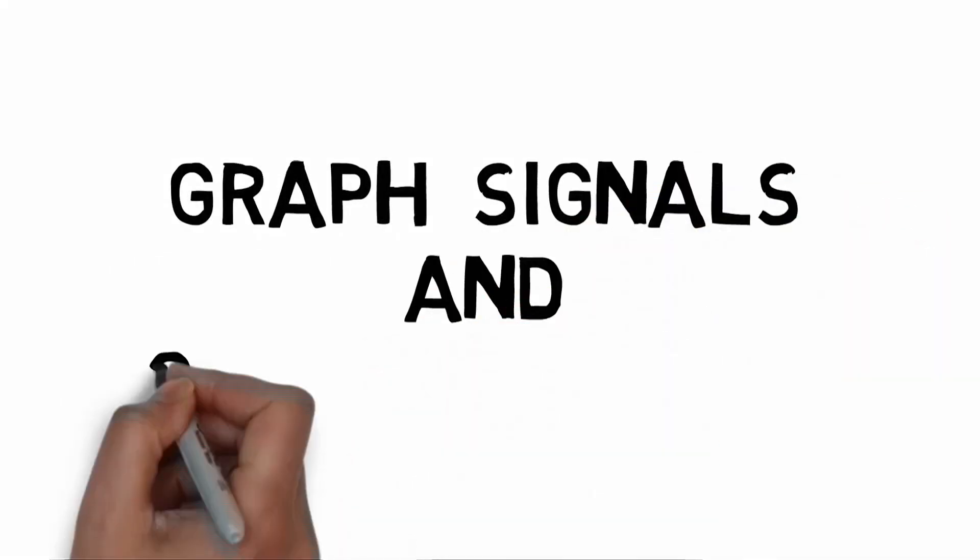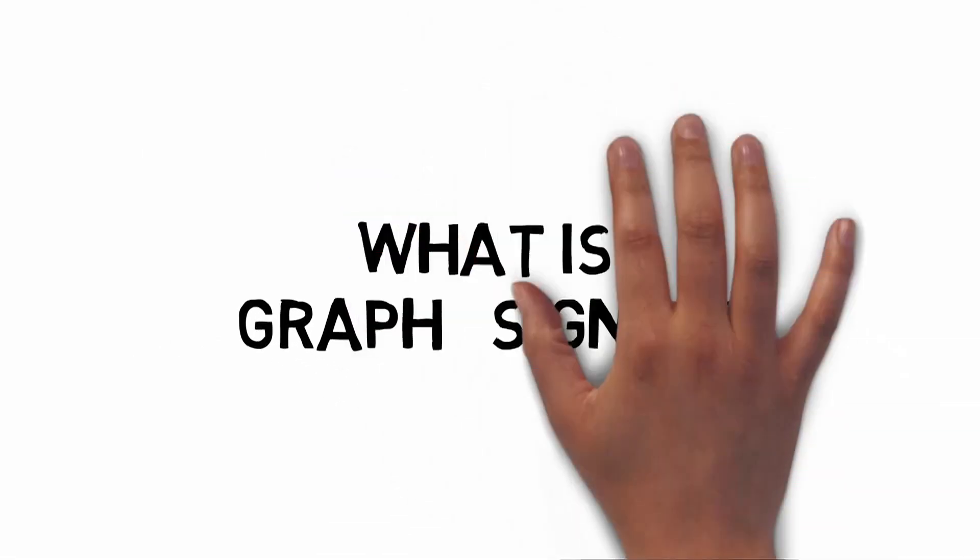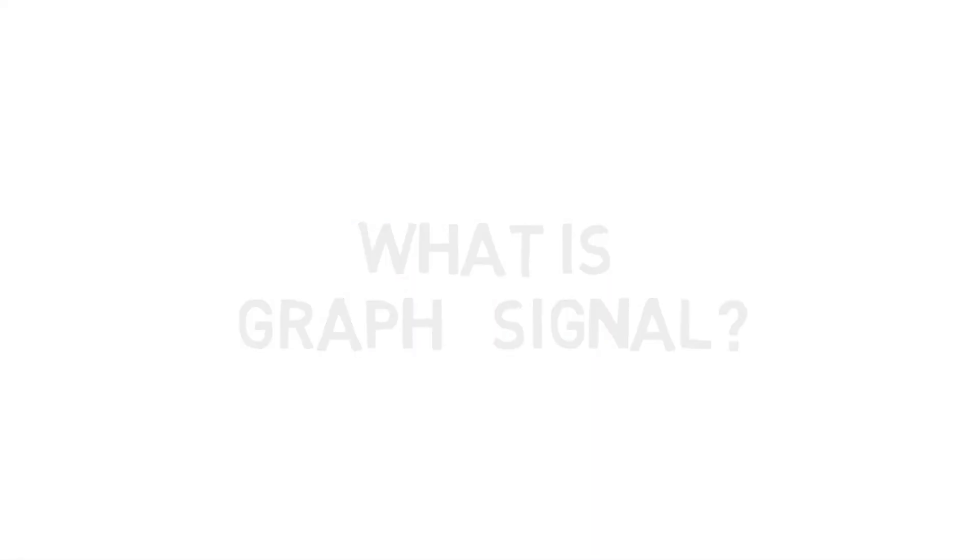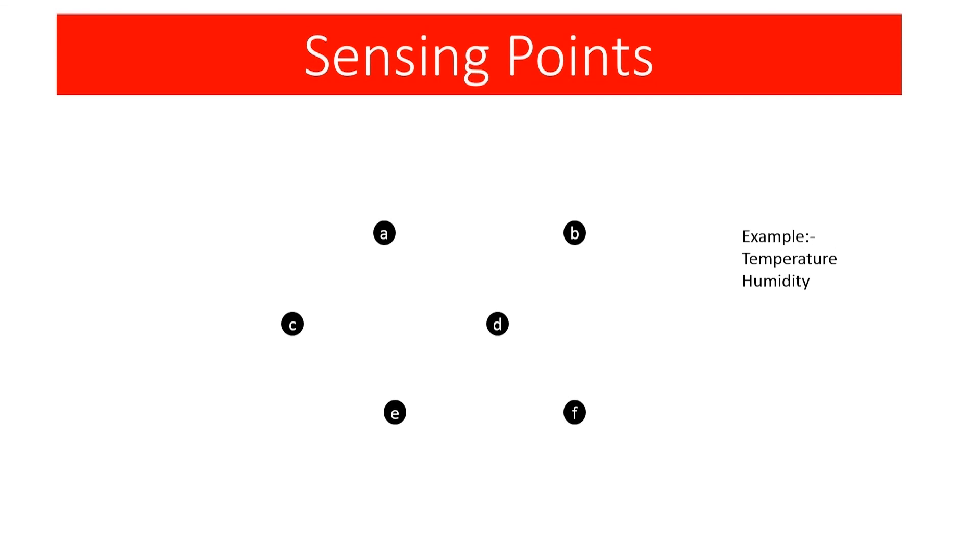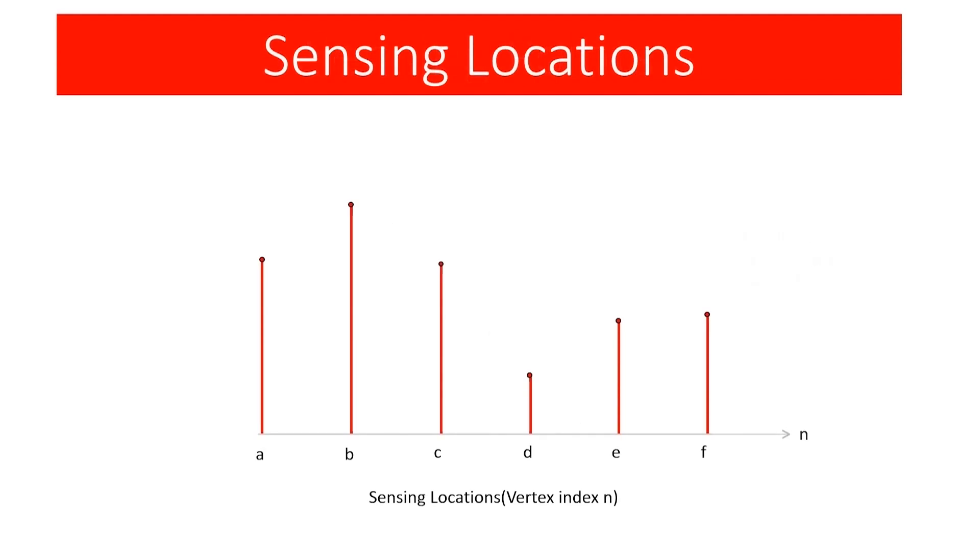We are going to learn about graph signals and graph filtering. Firstly we shall see what a graph signal is. Consider we have readings temperature, humidity, and locations of 6 sensing points. If we try to represent this in a diagram, all what we can do is.